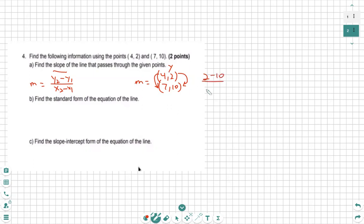2 minus 10 over 4 minus 7. We're going to now do some math. 2 minus 10 is negative 8. 4 minus 7 is negative 3. A negative over a negative is a positive. Our slope is 8 over 3.